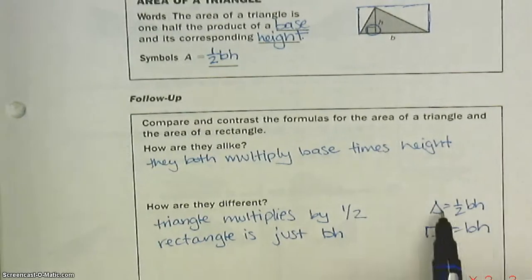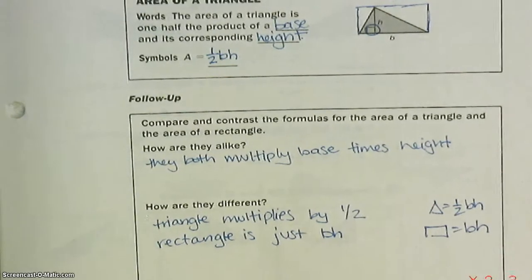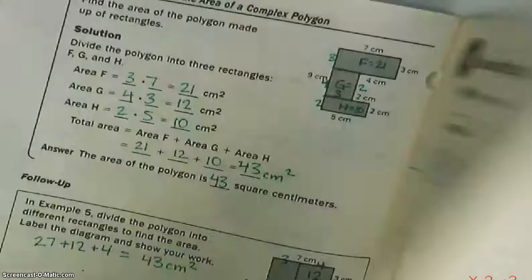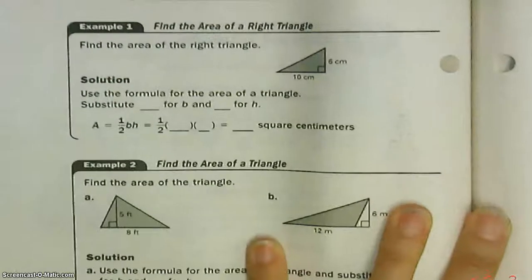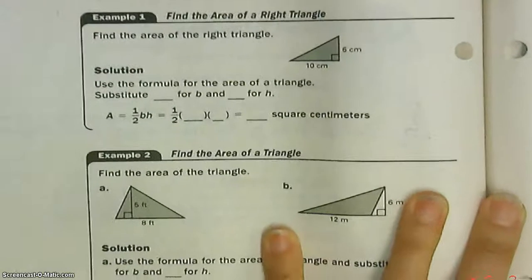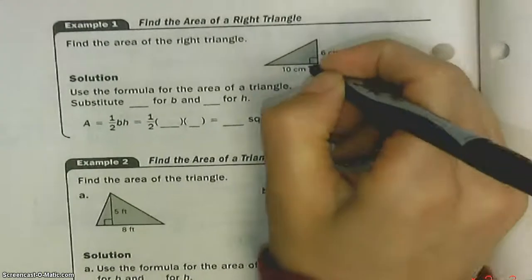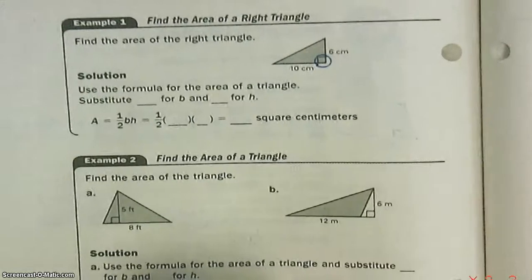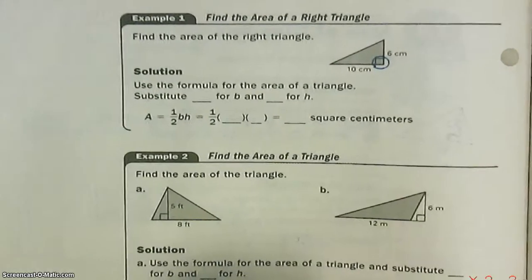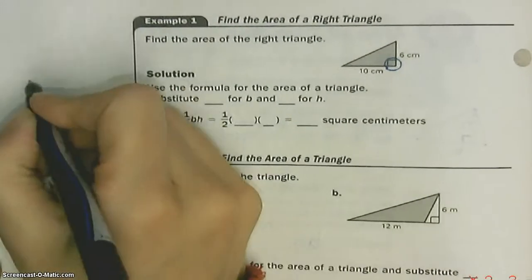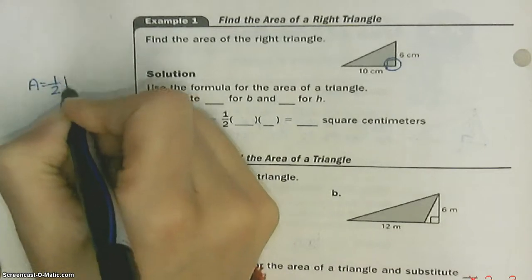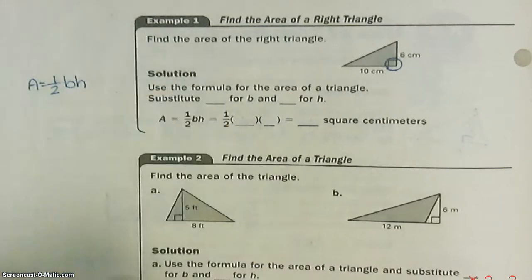So triangle equals one-half BH, and rectangle equals just BH, because a triangle is half of a rectangle. Let's do some examples. We're always looking for the base and the height to make the right angle. Remember, your first step is always to write your formula: Area equals one-half the base times the height.